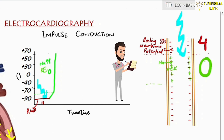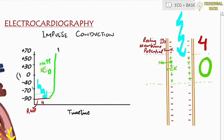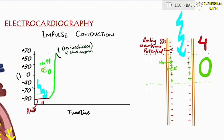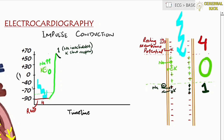This is Phase 0 of impulse conduction through the cardiac cell. Once this wave reaches the peak, the sodium channels become inactivated and the potassium channels open, driving potassium out of the cell — in other words, the positive charge moves out. Through Phase 1, there is a reduction in the positive charge inside the cell, but it is still positive.